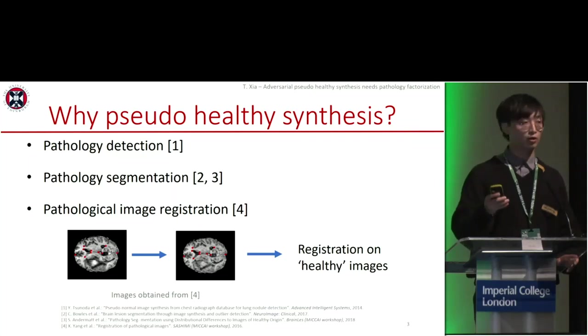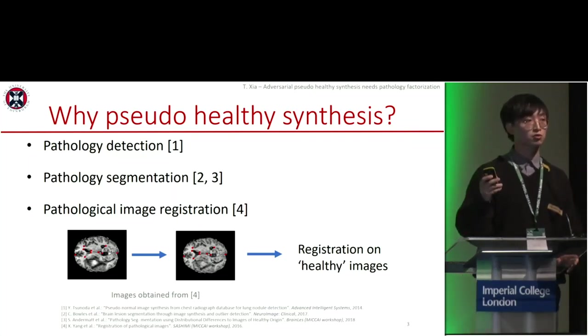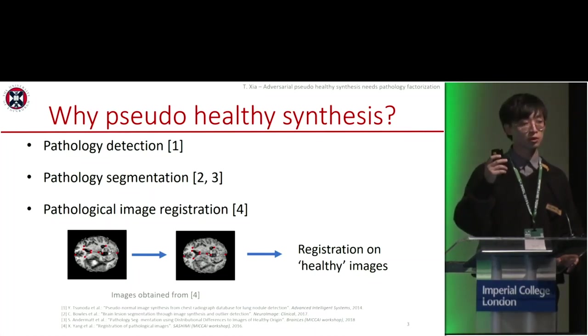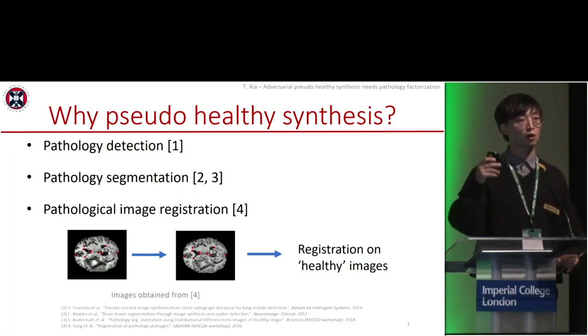We can even use it for pathological image registration. For example, on the left we have an image which has some deformations caused by some disease, and it is difficult for us to register an atlas to this image because of the deformation. So what we can do is generate the pseudo-healthy version of this image and perform registration on the pseudo-healthy images to avoid deformation.